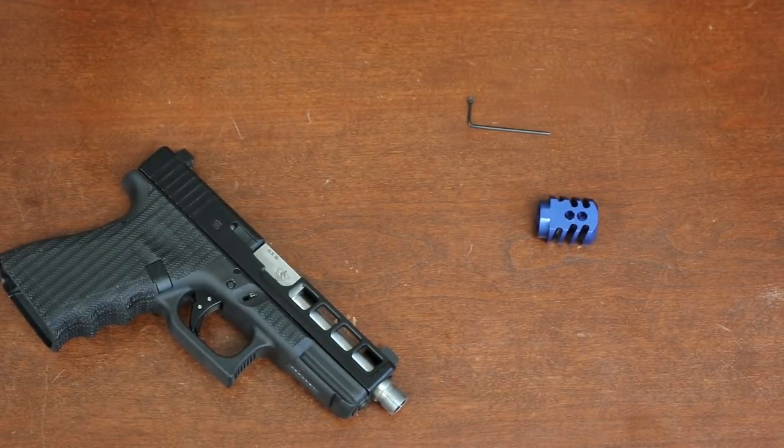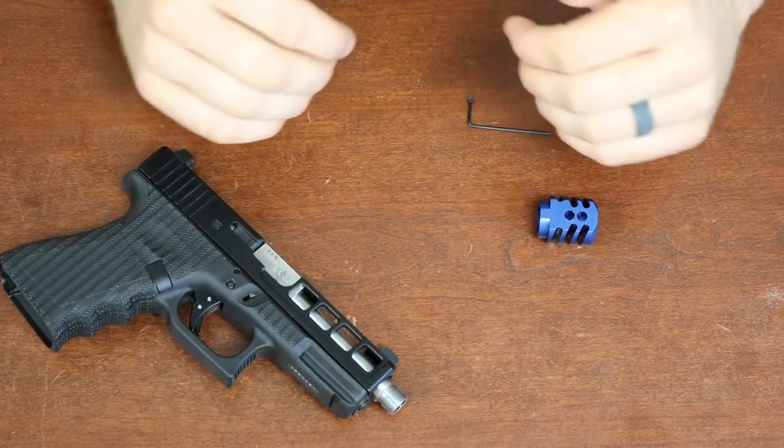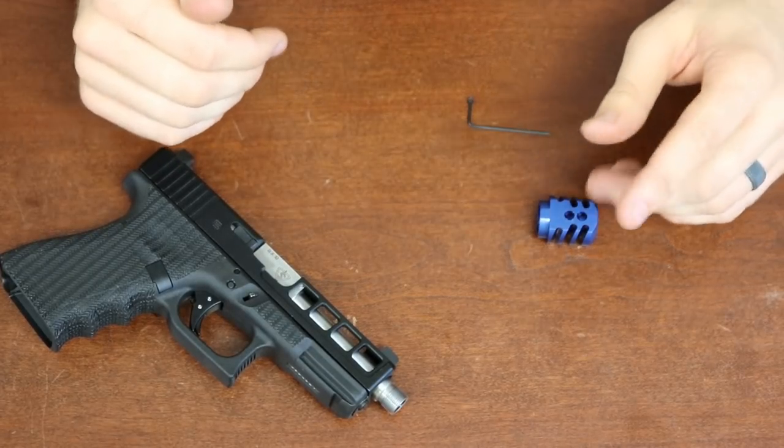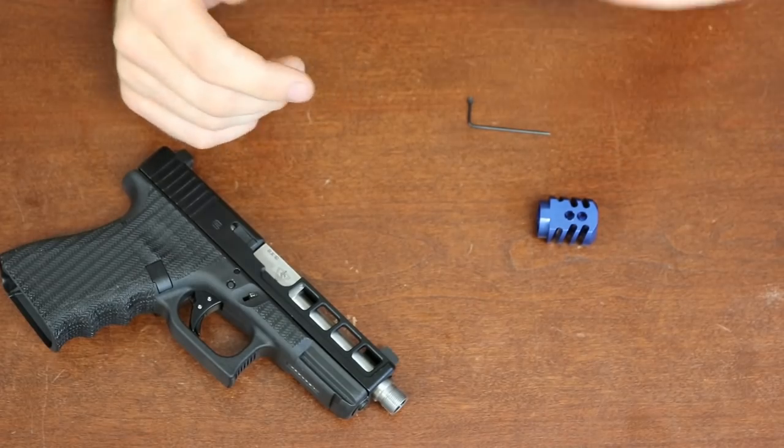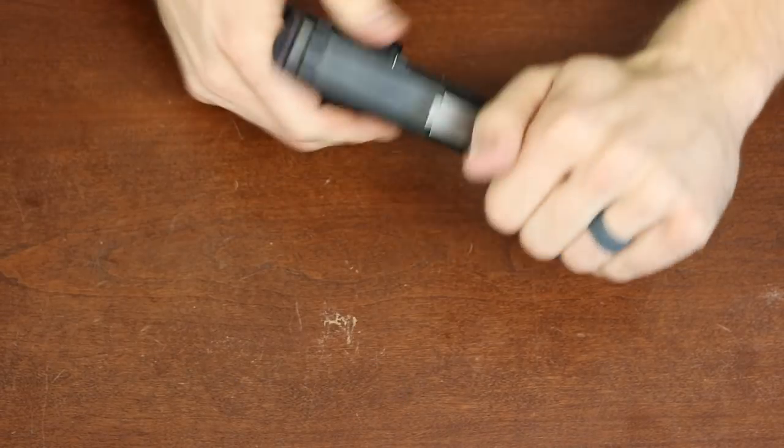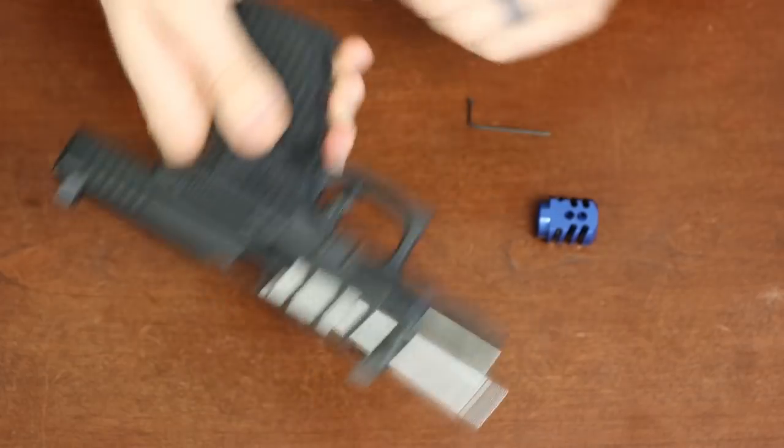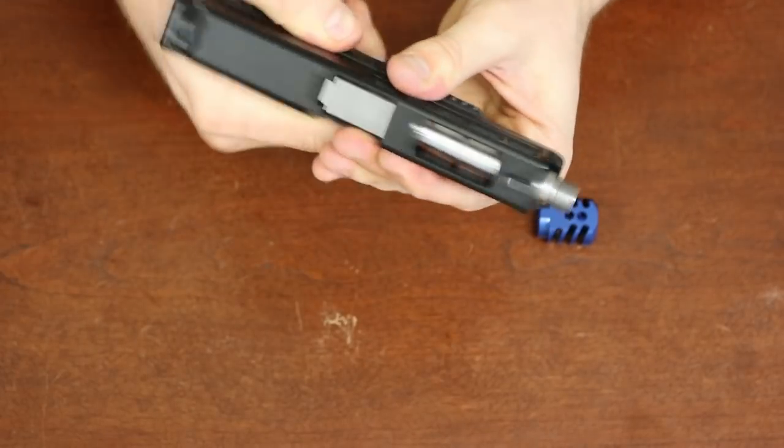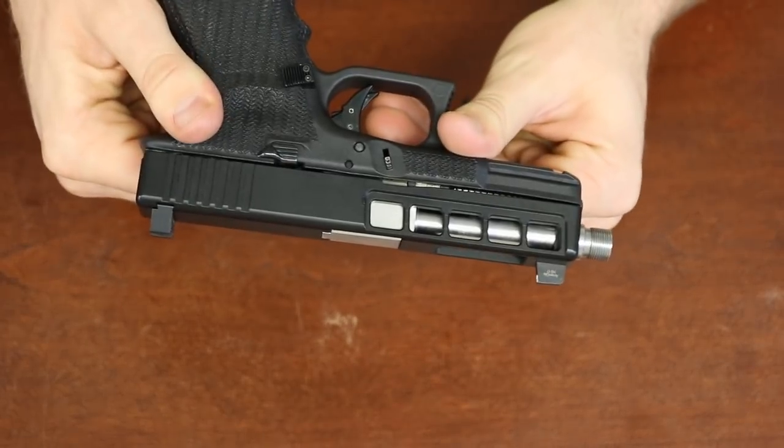Before we go any further, I want to show you the proper way to install one of these. What you're going to need is the allen key, the set screw. Gun is clear, no ammunition around. You will need a threaded barrel.